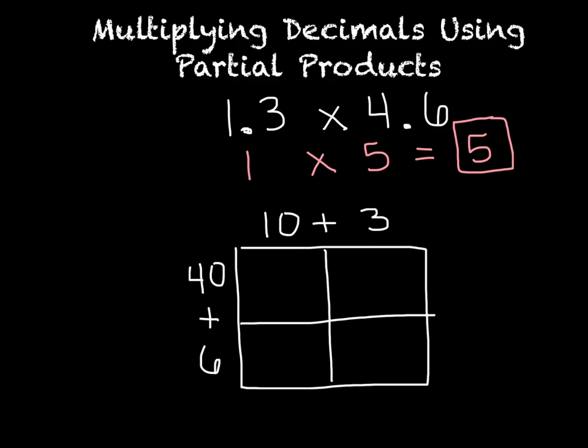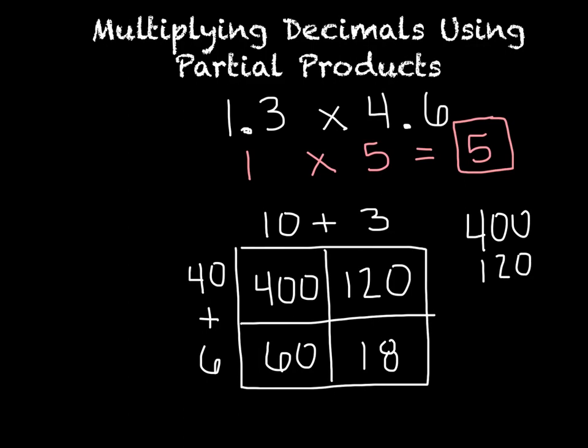You'll see why this may help some of you that are struggling, because now we're just going to write a normal partial product problem. It helps us get away from the fear of this decimal. So I turn this to 13 and this to 46. 40 times 10 is 400. 40 times 3 is 120. 10 times 6 is 60. And 6 times 3 is 18. I'm just going to add these like normal.